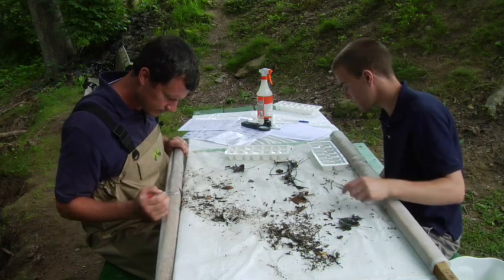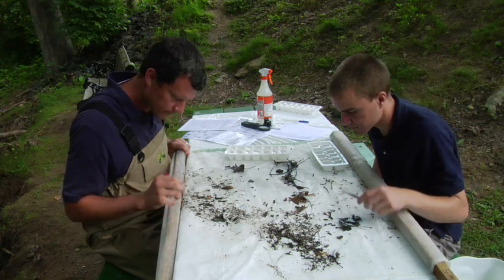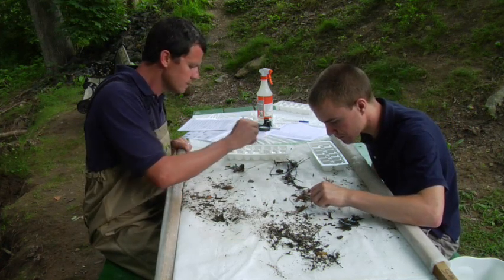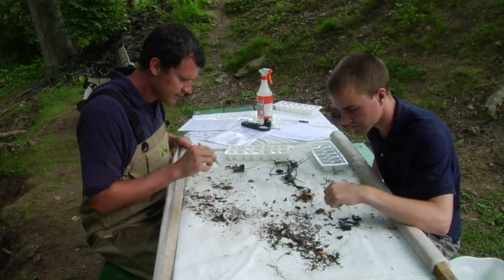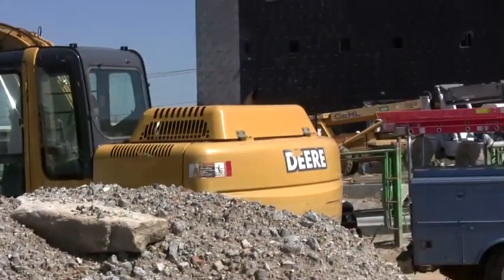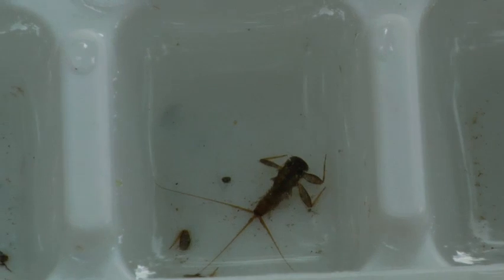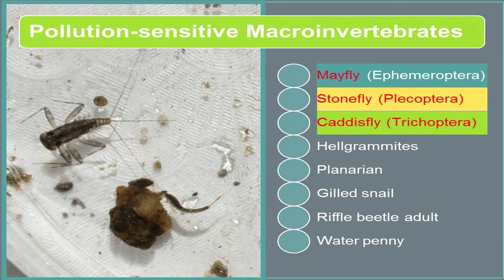The really neat thing about biological monitoring is that all of the critters we're sampling have different tolerance levels. Each species has a different tolerance level in terms of pollution — some can tolerate more, some are very sensitive and can't tolerate much. This varies a lot even between taxa. The EPT taxa are generally the most intolerant organisms. EPT stands for Ephemeroptera, Plecoptera, and Trichoptera — or mayflies, stoneflies, and caddisflies.